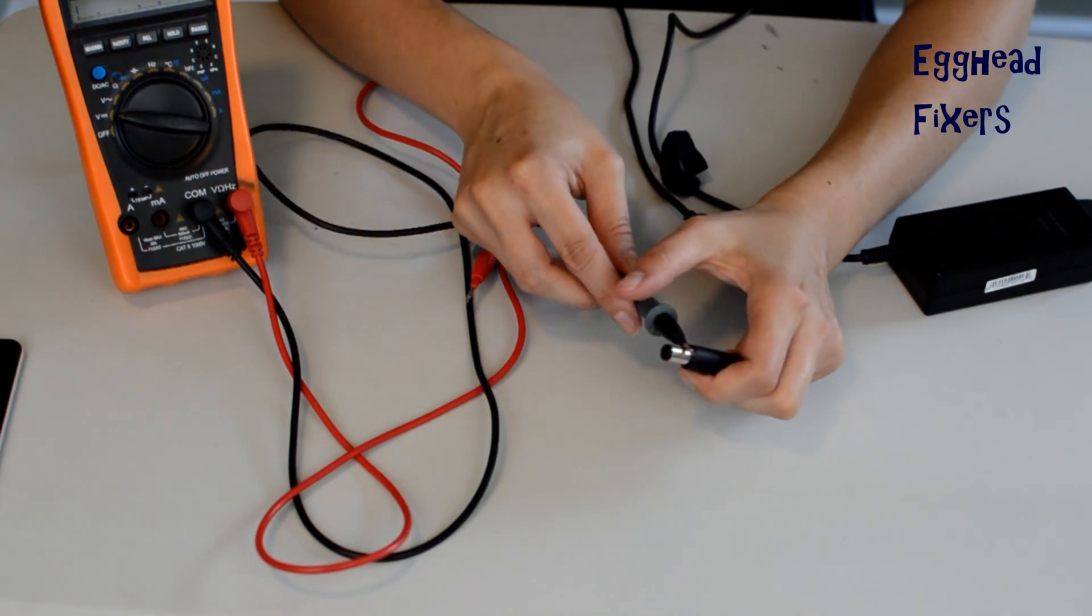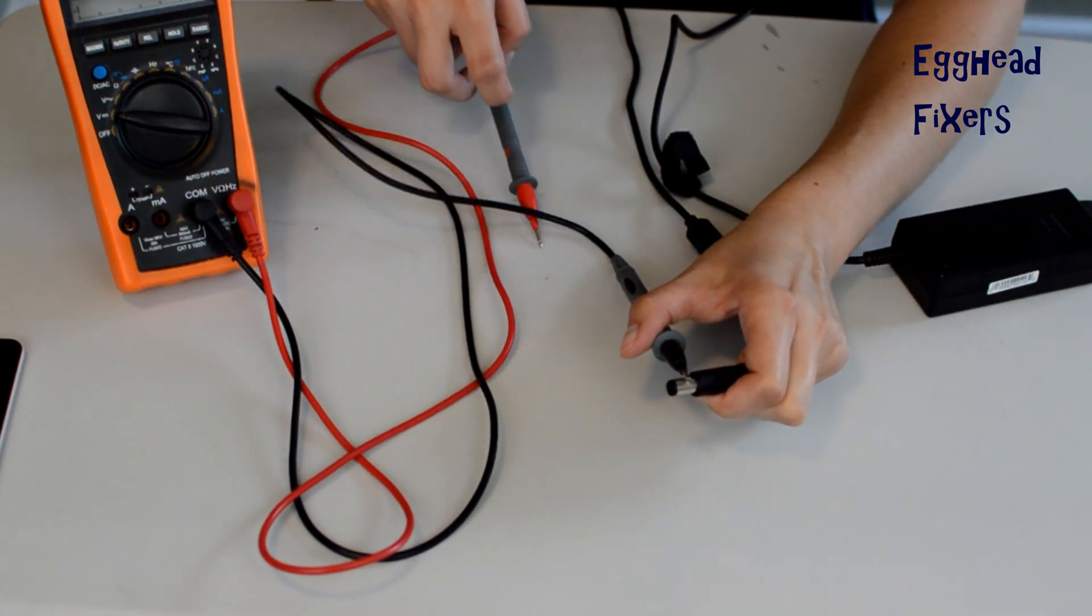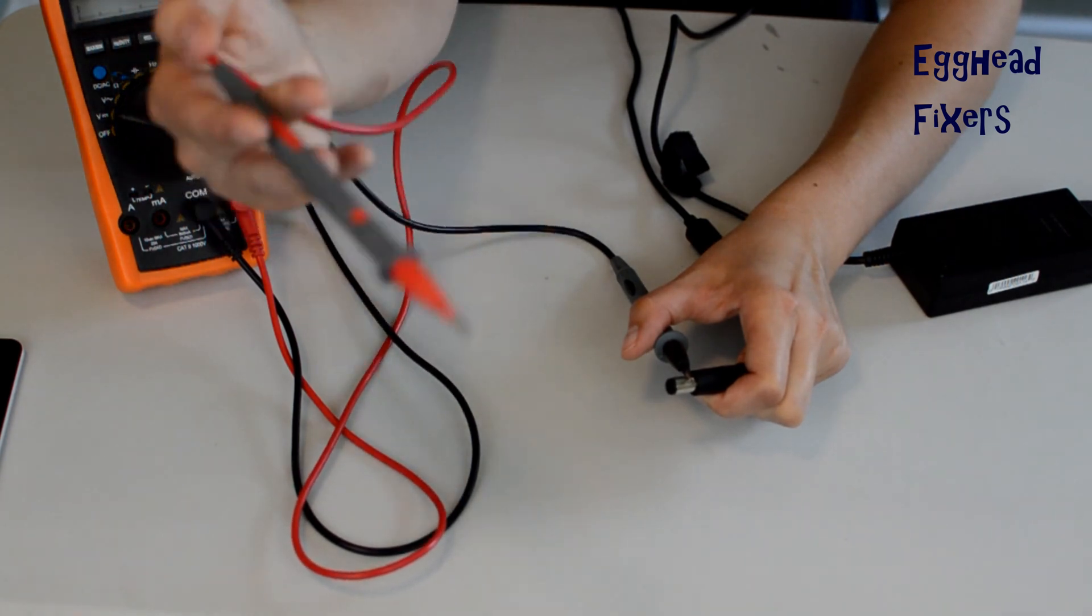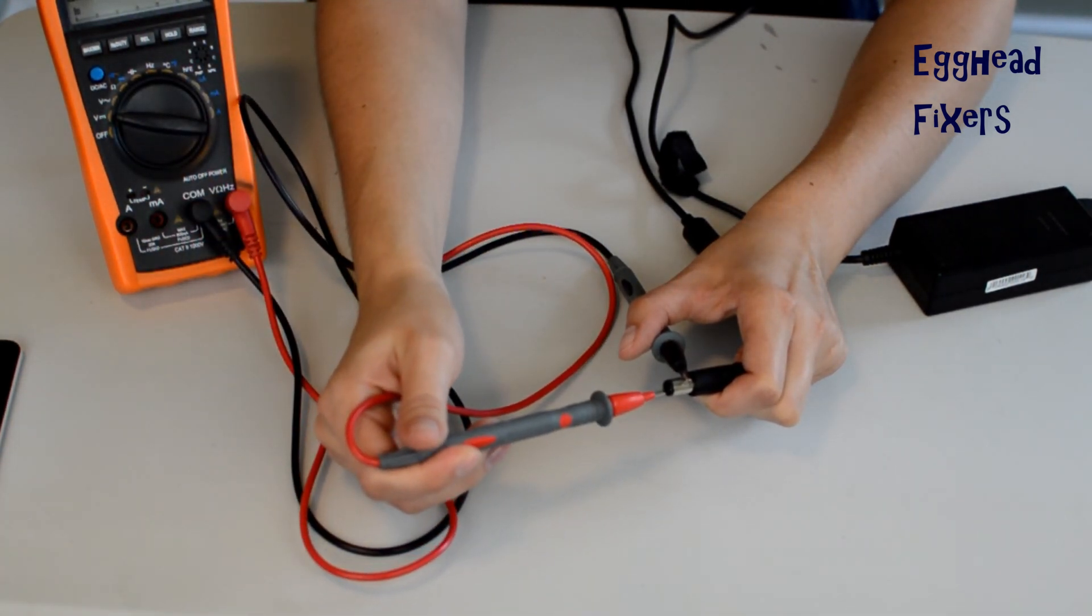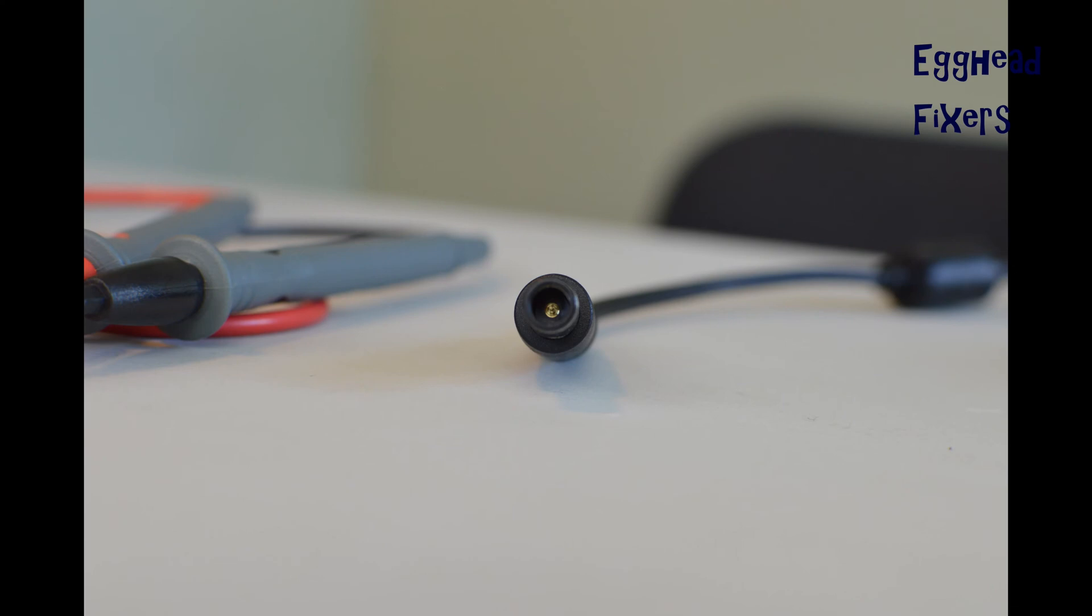Now you're going to take your black tester and set it on the outside of the charger, and then take your red tester and put it on the inside. That red tester needs to hit that gold post in the middle of your unit, and that's how you'll test it properly.